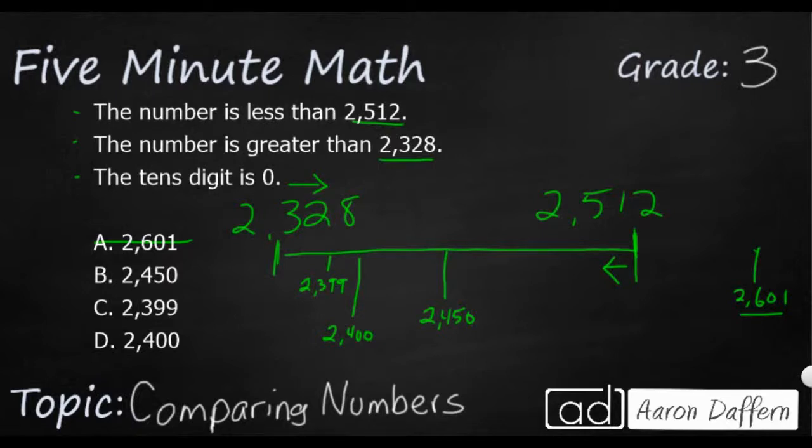So really it's this last clue that's going to tell us the 10's digit is 0. That 10 digit is 9, that 10 digit is 0, and that is 5. So our answer is going to be D, 2,400 because it has a 0 in the 10's place. And it is also greater than 2,328 and less than 2,512.